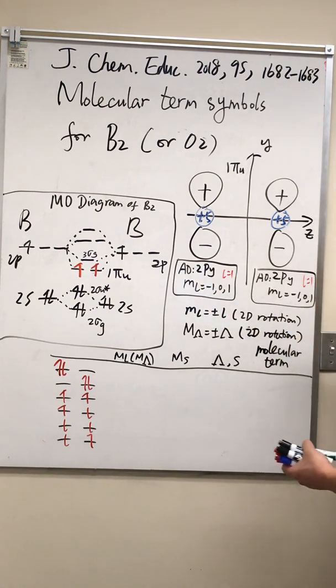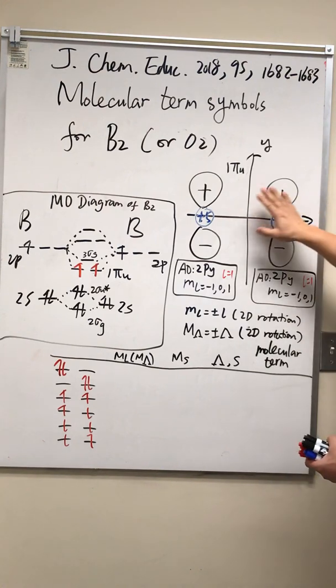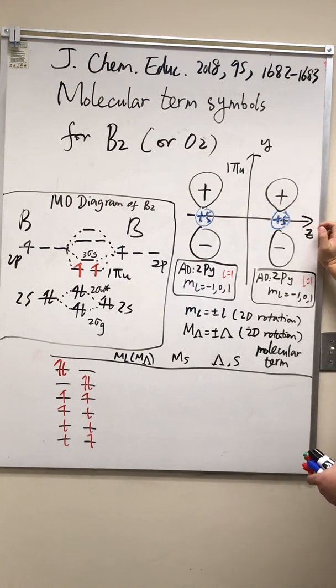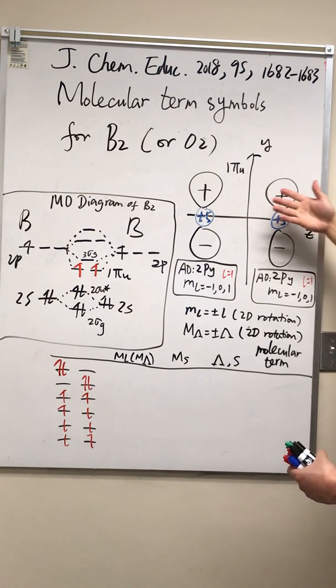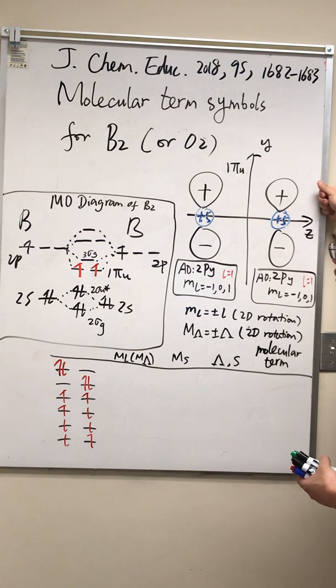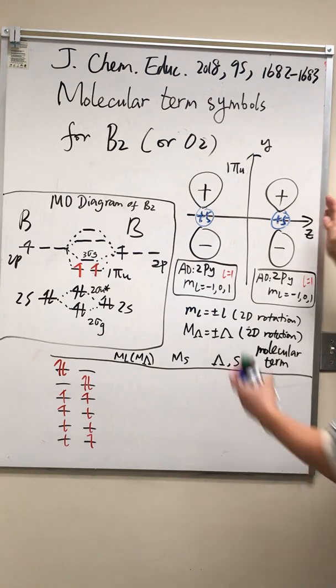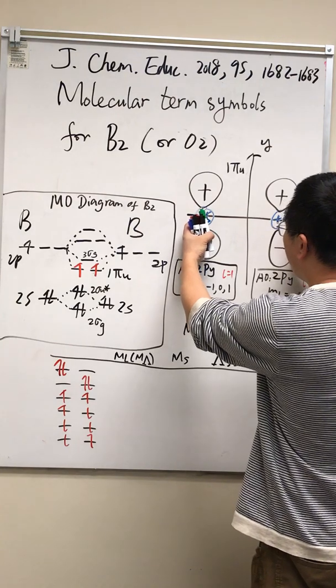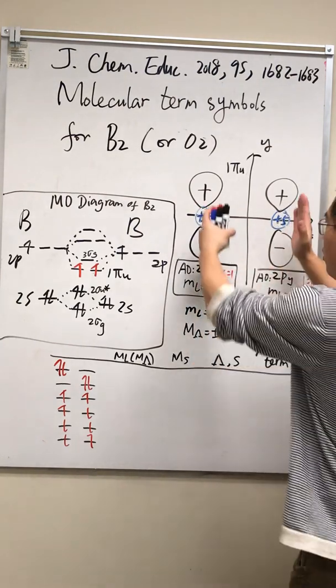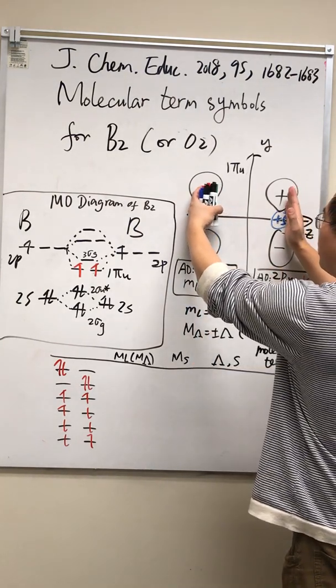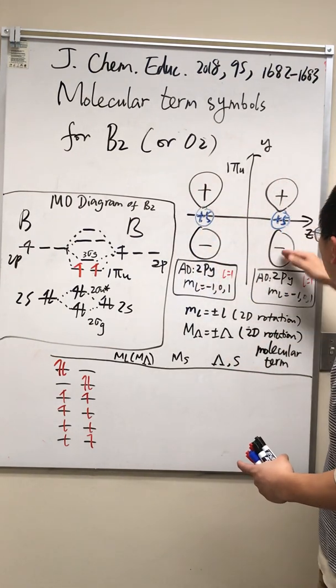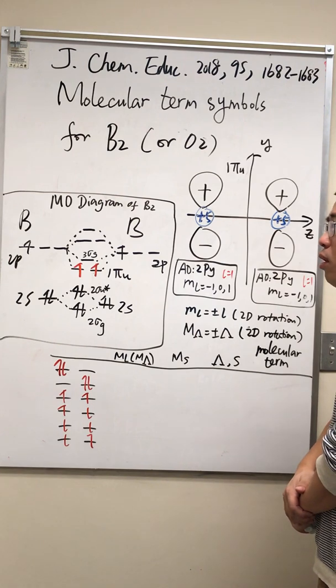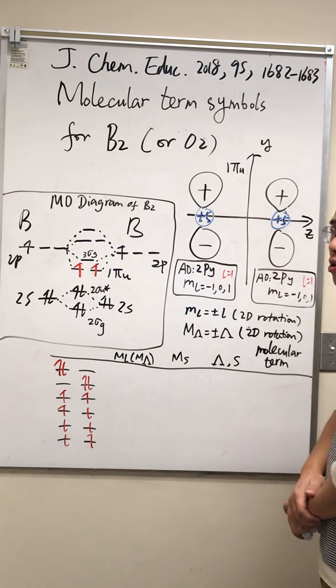However, in this situation, when we look at this Pi orbital, can this Pi orbital rotate about the z-axis? Yes, this Pi orbital can rotate freely about the z-axis. But can this orbital rotate about the y-axis? There's no way. If we rotate this Pi orbital this way, these two P orbitals will no longer be centered at the nucleus.